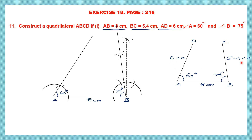Now we have to get 6 centimeters and 5.4 centimeters. Take your compass, measure 6 centimeters, then place your compass needle at A and draw an arc on the 60-degree line. Mark this point as D — so D is 6 centimeters from A. Similarly, measure 5.4 centimeters on your compass, place the needle at B, and on the 75-degree line draw an arc. Mark that point as C, so BC is 5.4 centimeters.